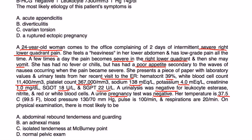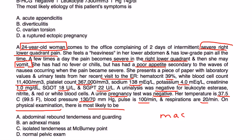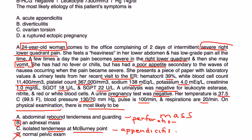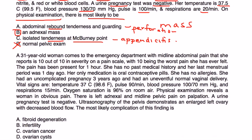Temperature is 37, blood pressure 130, pulse 100, respirations 20. On physical exam, there is most likely a mass in the adnexa — her age and the severe right lower quadrant pain with nausea and vomiting are clues pointing to torsion. The answer is a palpable adnexal mass. A normal pelvic exam is not expected in this pathology. Rebound tenderness and guarding would suggest perforation; tenderness at McBurney's point describes appendicitis. The essentially normal WBC rules out some other diagnoses.